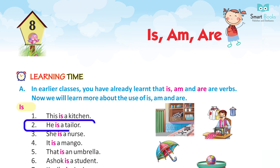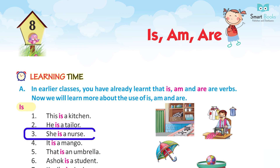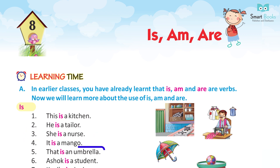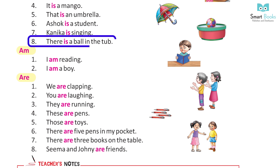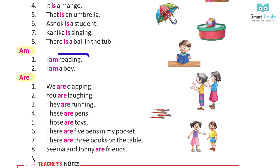Is — one: This is a kitchen. Two: He is a tailor. Three: She is a nurse. Four: It is a mango. Five: That is an umbrella. Six: Ashok is a student. Seven: Kanika is singing. Eight: There is a ball in the tub.